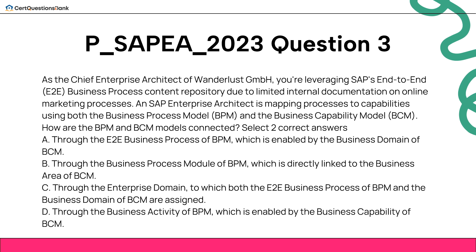Select two correct answers. A. Through the E2E Business Process of BPM, which is enabled by the Business Domain of BCM. B. Through the Business Process Module of BPM, which is directly linked to the Business Area of BCM. C. Through the Enterprise Domain, to which both the E2E Business Process of BPM and the Business Domain of BCM are assigned. D. Through the Business Activity of BPM, which is enabled by the Business Capability of BCM.